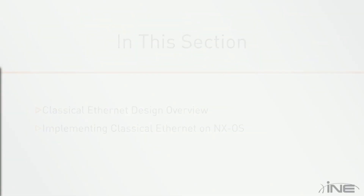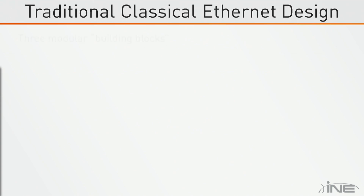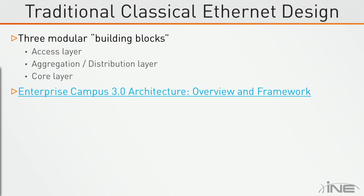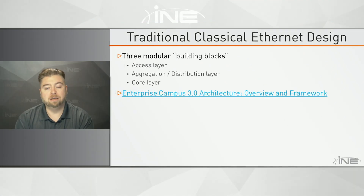In traditional Ethernet design, we typically use what is called a three-tier design, or three modular building blocks: the access layer, the aggregation or distribution layer, and the core layer. Most of you are probably familiar with this from traditional enterprise design or CCNP switching-type logic.